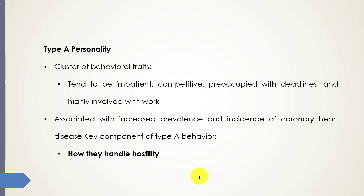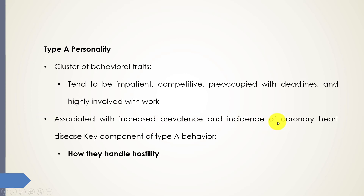When we are thinking of physical illness and personality types, there are two main types to consider: Type A and Type B personality. The Type A personality is what you would imagine the executive to be — people who tend to be very impatient, very demanding, very competitive, constantly worried about deadlines, and highly involved with their work. What we know about the Type A personality is that these individuals have an increased prevalence and incidence of coronary heart disease.